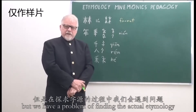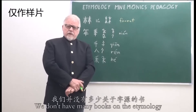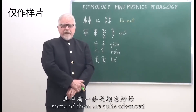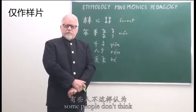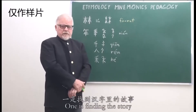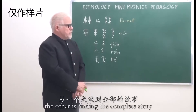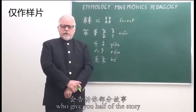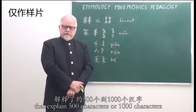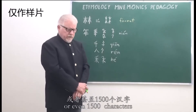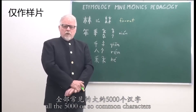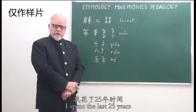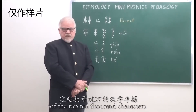We have a problem finding the actual etymology. In English we don't have very many books on etymology, and in Chinese we have some books, but some are quite advanced — they're scholarly. There are many educated people who give you half of the story. There are many books that explain 500, 1,000, or even 1,500 characters, but we really want to explain all 5,000 or so common characters. I've spent the last 25 years trying to explain the etymology of the top 10,000 characters.